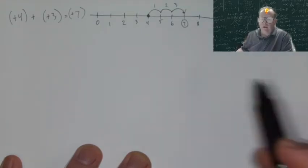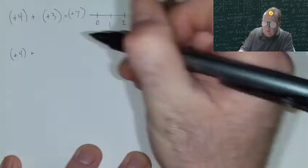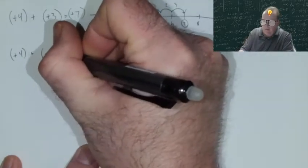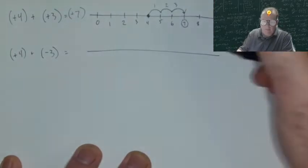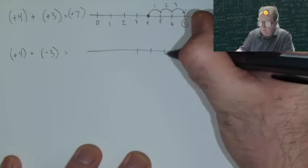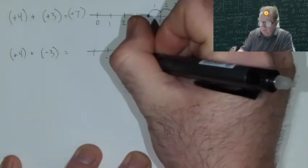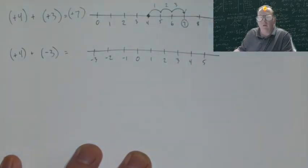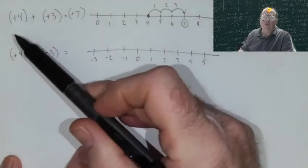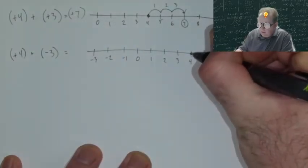So now, what if we change this a little bit? Let's take positive 4 and we're going to add—we're still adding—but instead of positive 3, we're going to add negative 3. Let's see what that looks like now on a number line. I'm going to expand my number line just a little bit. I'm not going to use the whole thing, but I just want you to get used to seeing negative numbers as well as positive numbers on your number line. So just like above, we take a look at our first number, positive 4. That is our starting point. So we find positive 4 on our number line and I'm going to mark that as my starting point.